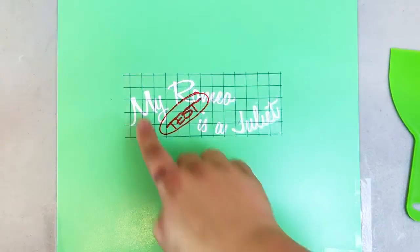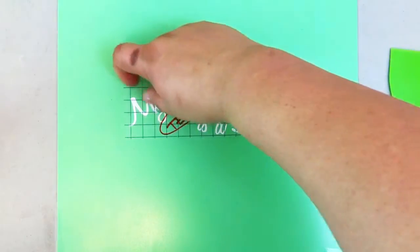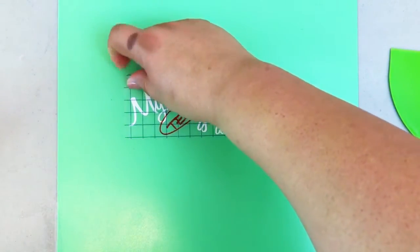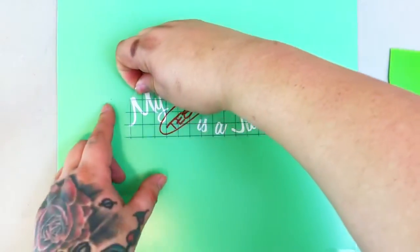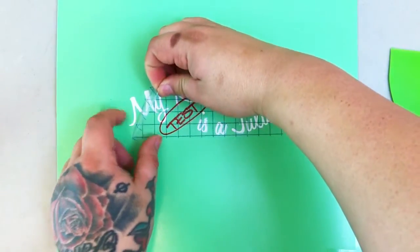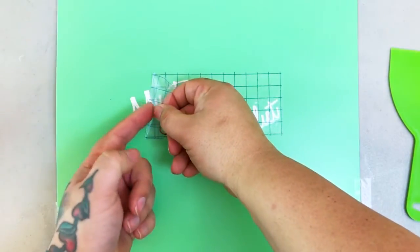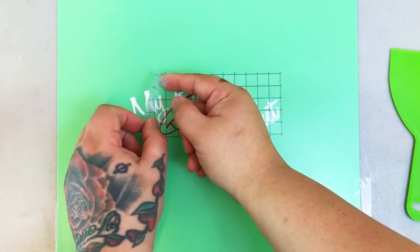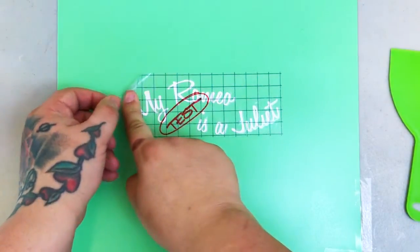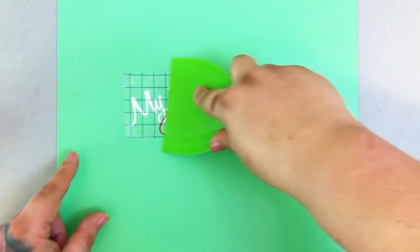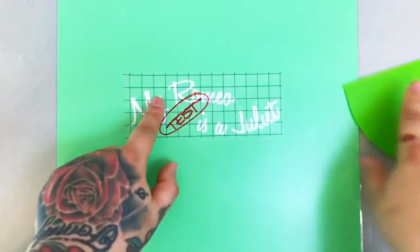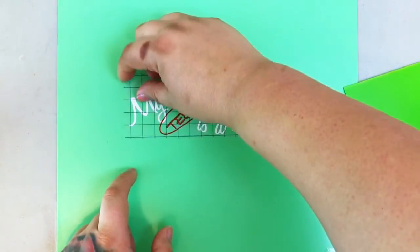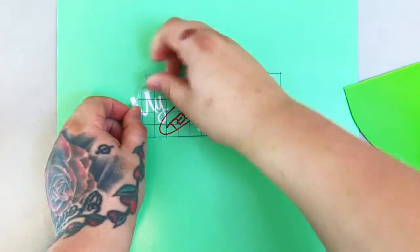The final step is to remove the transfer tape, and it's very crucial that you pull it slowly. The reason being, if for some reason some of your decal were to stick to the transfer tape and start coming up from your surface, you can stop what you're doing, go back, repeat the steps from step four where you smooth it out and put some pressure on it to get it to stick to the surface, and then try pulling again.